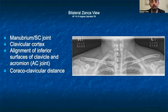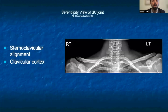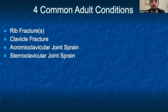This particular x-ray shows an acromioclavicular sprain on the left side. The third common x-ray view we will discuss is the serendipity view, which is an anterior-posterior projection with a 40 degree cephalic tilt, best at assessing the sternoclavicular joint or dislocation. The four common adult conditions we'll discuss are rib fractures, clavicle fractures, acromioclavicular joint sprains, and sternoclavicular joint sprains.